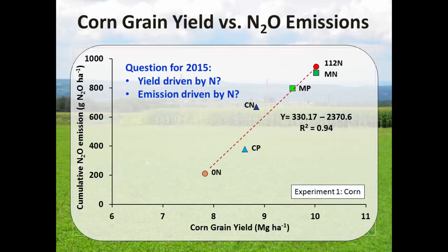We looked at corn yield versus nitrous oxide emissions and saw a linear trend. So basically, there is a linear relationship. We're now asking whether yield or emissions are driven by nitrogen. This year we split our organic plots in two and are looking at sidedressing nitrogen in half of them to determine if it's a nitrogen-related issue.